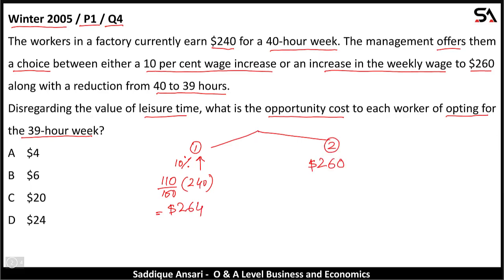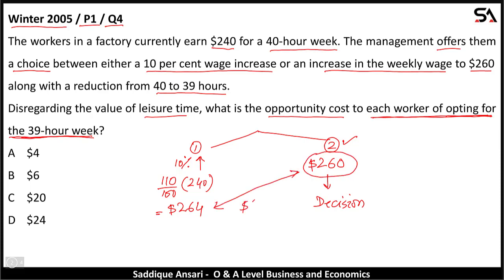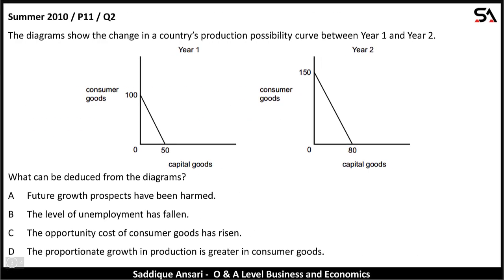If each worker opts for the 39-hour week, that is option two, this becomes the decision. Each worker will sacrifice $4, which is the difference between $264 and $260. So $4 will be the opportunity cost. The first option is $4, so this is the correct answer.